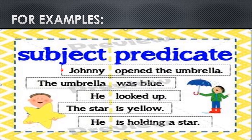Few more examples. Johnny opened the umbrella. So here what is the subject? Johnny. And what did he do? He opened the umbrella — it is the predicate. The umbrella was blue. What is the naming word and the subject? The umbrella. And how is it? Was blue. He looked up. What is the subject? He. And the predicate — looked up.